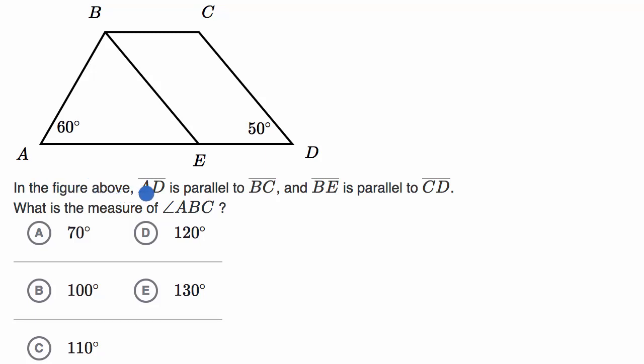In the figure above, segment AD is parallel to segment BC. So AD is parallel to BC, so we could put little parallel symbols right over here. And BE, right over here, is parallel to CD. So these two are parallel to each other.